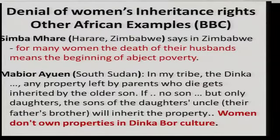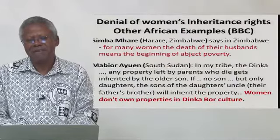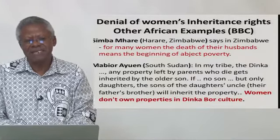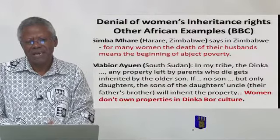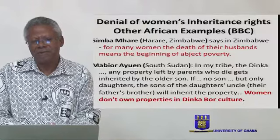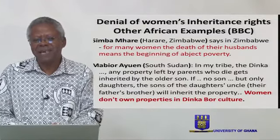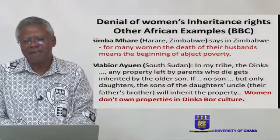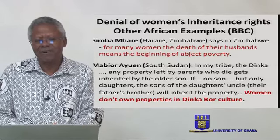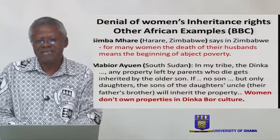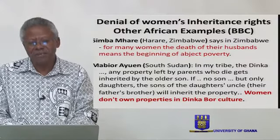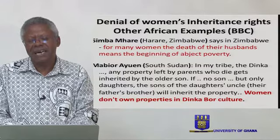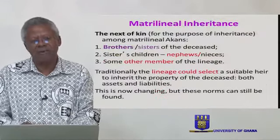This denial of women's inheritance rights is found in many parts of Africa. For example, Simba from Harare, Zimbabwe states that for many women, the death of their husbands means the beginning of abject poverty — whatever the husband had is taken away from them. And someone called Mbjor from Southern Sudan says that in her tribe, the Dinka, any property left by parents who die gets inherited by the older son. If there is no son but only daughters, the sons of the daughter's uncle — that is their father's brother — will inherit the property. Women don't own property in Dinka culture. These kinds of things are common throughout Africa.